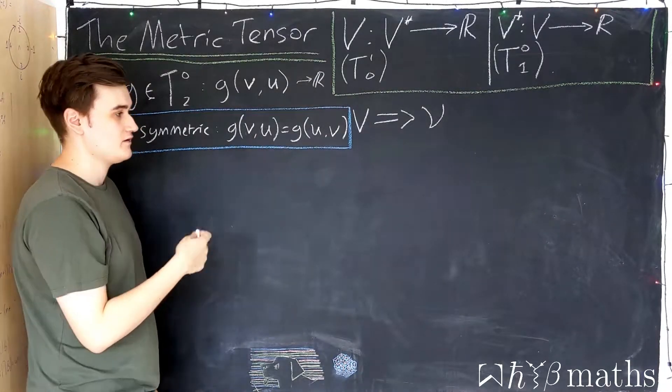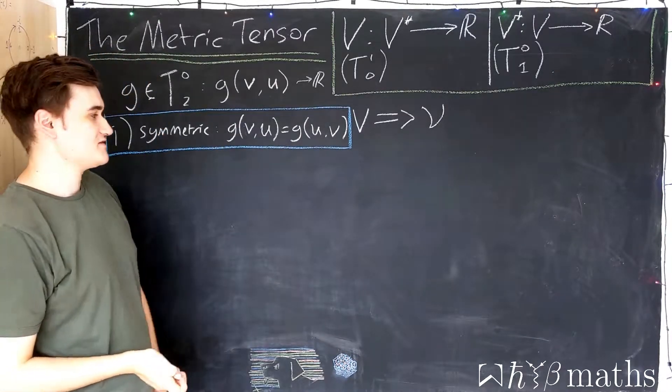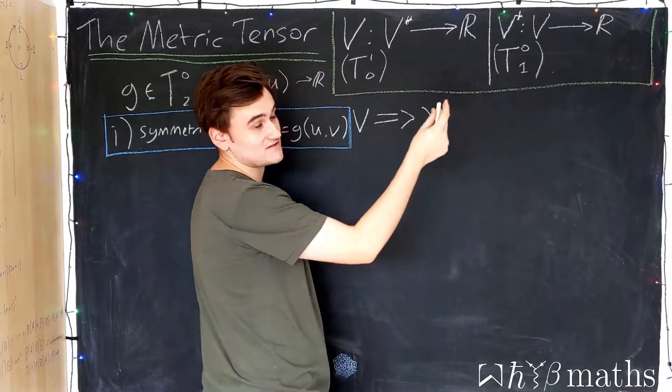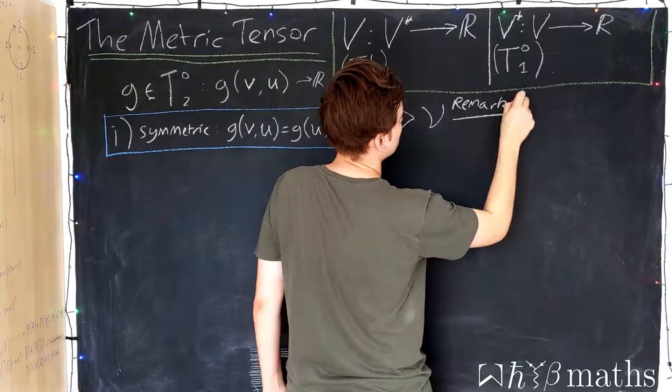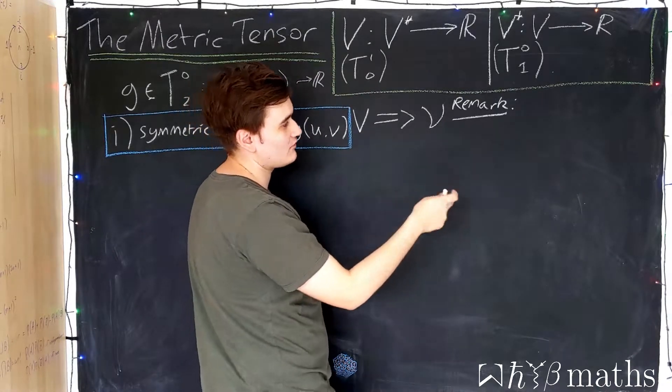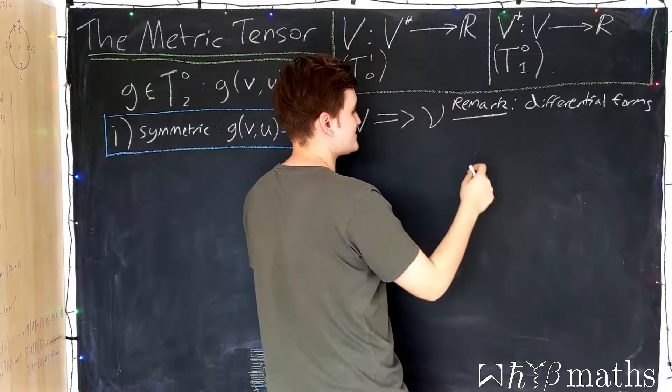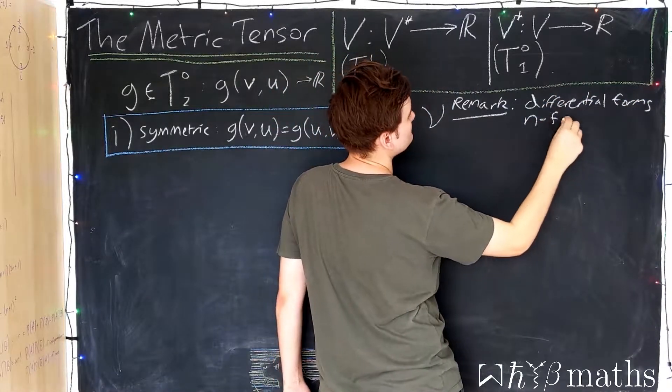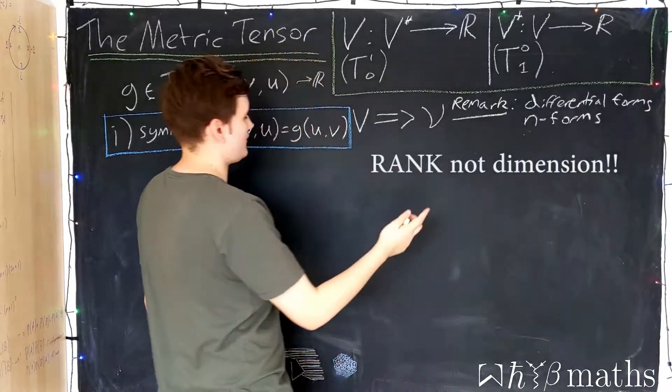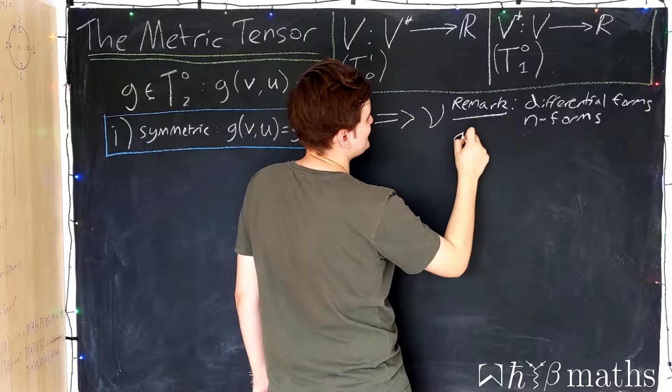You'll sometimes see the metric called a bilinear form, which is just a fancy word for a linear map which takes two arguments. We're not going to use this terminology because it can sometimes get confusing when we go on to discuss differential forms, which are sometimes just abbreviated to be called n-forms where n is the dimensionality of the differential form. The reason we're not going to use this terminology is because n-forms are anti-symmetric.